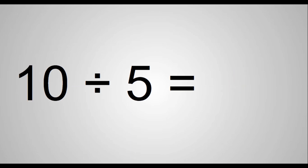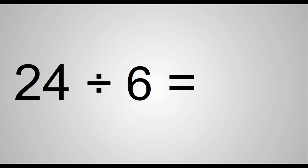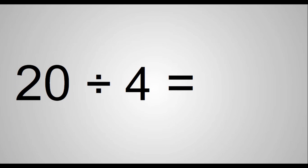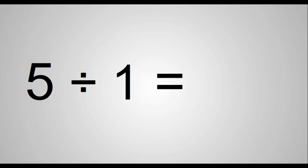10 divided by 5 equals 2. 24 divided by 6 equals 4. 45 divided by 9 equals 5. 25 divided by 5 equals 5. 20 divided by 4 equals 5. 25 divided by 5 equals 5.